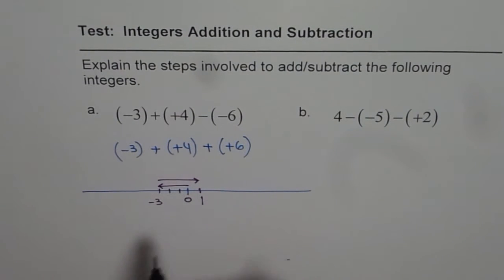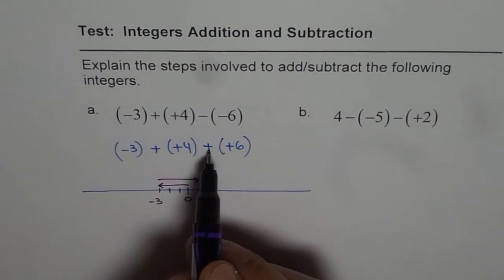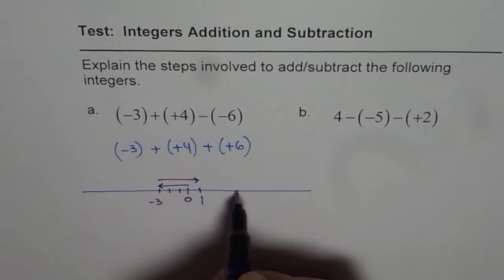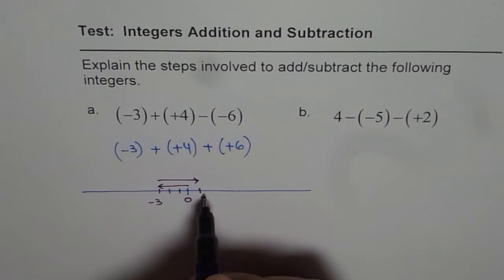So, minus three plus four is indeed one. Now, we need to add six more. So, from here, we will go six more units to the right. So, that is to say, let me write one.